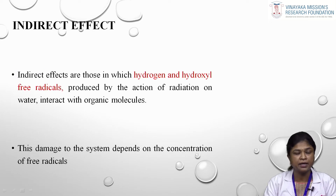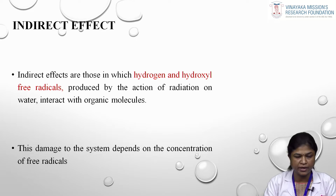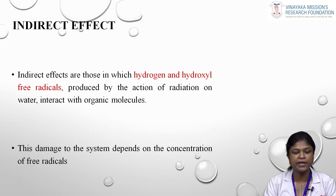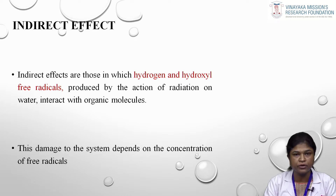Most cells consist of water molecules — about 70 percent of the cell is water. When these water molecules are irradiated, it produces what is called the indirect effect. Indirect effects are those in which hydrogen and hydroxyl free radicals are produced by the action of radiation on water, which then interact with organic molecules. The damage to the system depends upon the concentration of these free radicals.